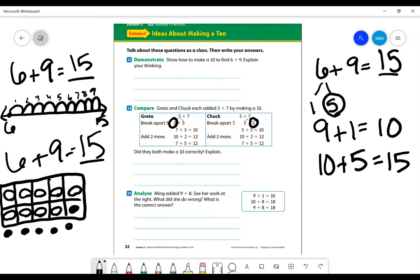Now again, this strategy works really well for some friends. But counting on is great too. Memorizing your math facts. That's amazing. So remember, use what works best for you. All right. It says Ming added 9 plus 8. See her work at the right. What did she do wrong? What is the correct answer?